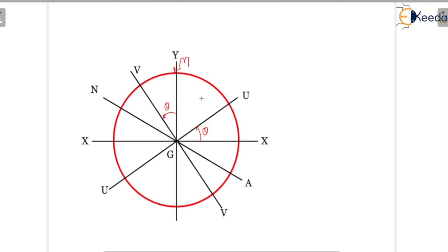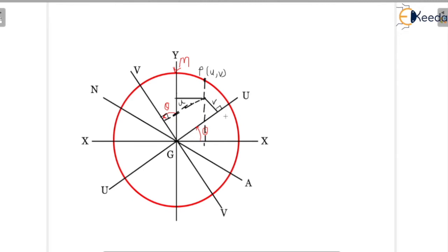We need to find the resultant stress at any point P. This point P has coordinates x and y with respect to axes XX and YY, and also coordinates u and v with respect to the UU and VV axes. Let us consider point P — it has coordinates u and v. We draw the perpendicular distances for u and v, and let the total angle here be alpha.